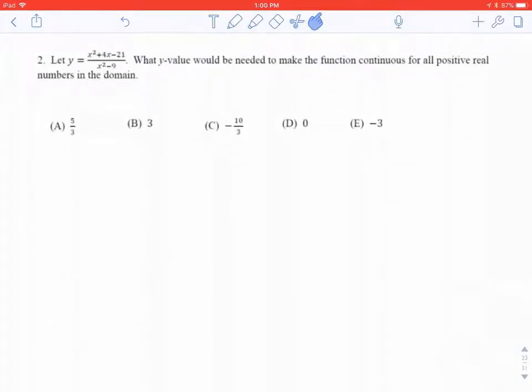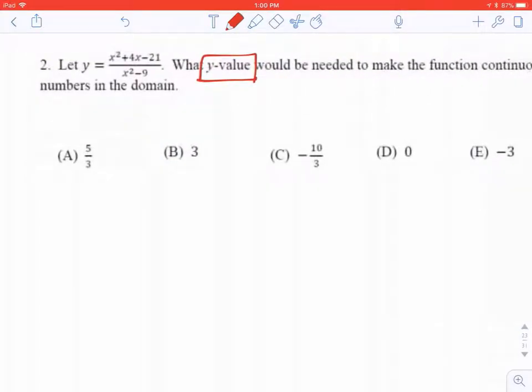Number 2. This says that we are supposed to let y equal this function. What y value would be needed to make the function continuous? In order to be able to make a function continuous, it must mean there's a hole in the graph. So if there's a hole in the graph, that means factors have to cancel.